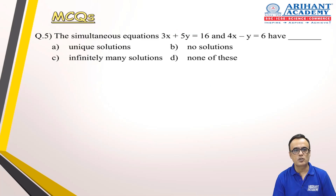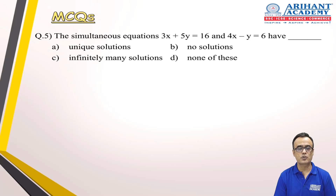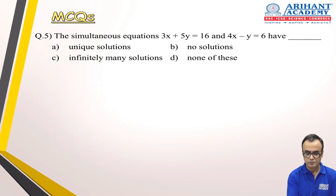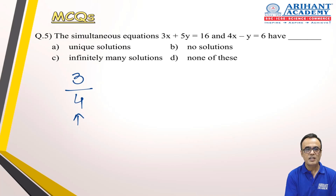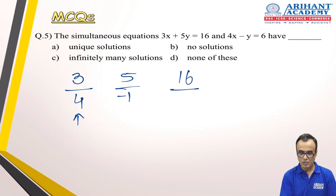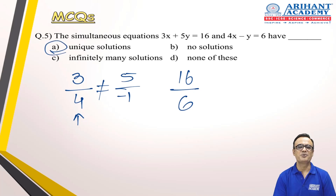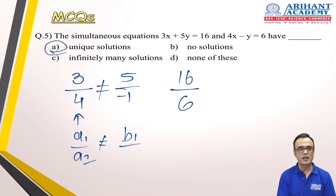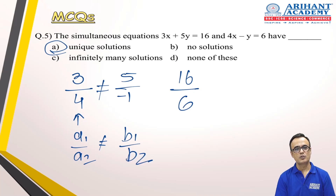Let's take a quick look at a sum based on this. The simultaneous equations 3x + 5y = 16 and 4x − y = 6 — you need to find the nature of their solution. Work out a₁/a₂ = 3/4, and b₁/b₂ = 5/−1. Since a₁/a₂ ≠ b₁/b₂, it is immediately clear that this is a unique solution. As we recalled, when a₁/a₂ ≠ b₁/b₂, we have a unique solution — that's your answer. Wrap it up and move to the next.